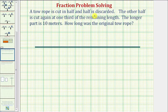A tow rope is cut in half and half is discarded. The other half is cut again at one third of the remaining length. The longer part is 10 meters. How long was the original tow rope? We'll solve this problem two ways.